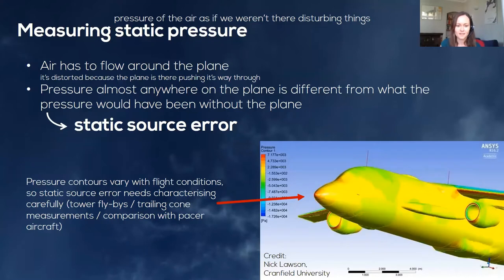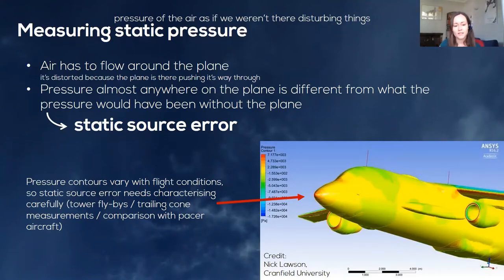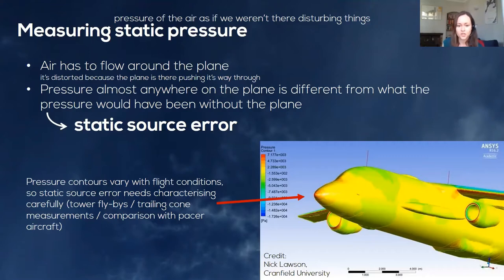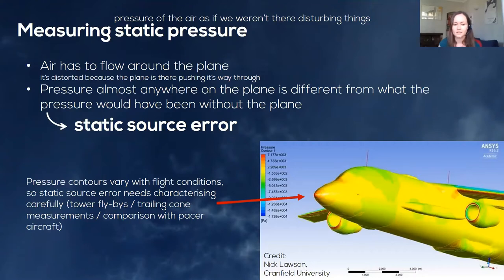This is done by properly characterising the static source error, for example using tower flybys — although there's a limit to how many altitudes you can characterise using a ground tower — or by attaching a reference pressure measurement to the aircraft. One way is to attach a trailing cone: a long tube out of the back of the aircraft stabilised by a cone and connected to a pressure transducer inside. The measurement position is then well behind the aircraft and behind its aerodynamic influence, giving you a reference. Alternatively, comparison with a pacer aircraft carrying a trusted pressure measurement is another option.